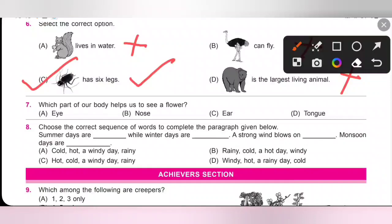Seventh one, which part of our body helps us to see a flower? So, we know eye is a sense organ which helps us to see. So option A is the correct answer.